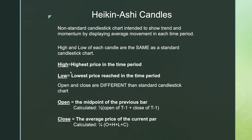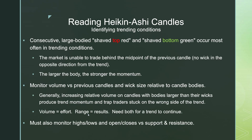The high is the highest price in the time period; the low will be the lowest price. The open and close, however, are different than the standard candlestick chart. The open is at the midpoint of the previous bar — no matter where the period actually opened, the Heikinashi open will be the midpoint of the previous bar. The close is the average price of the current bar, not where the auction ended, but the average price of all participants who took part during that period.